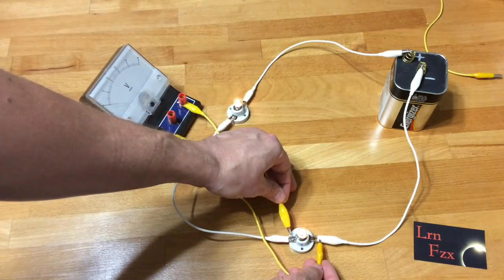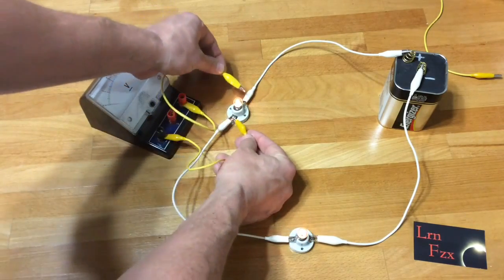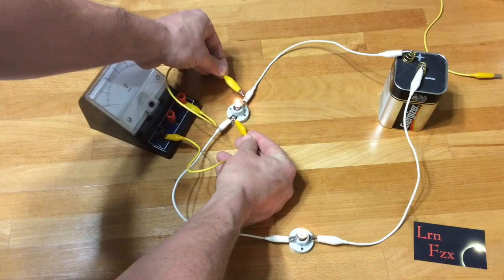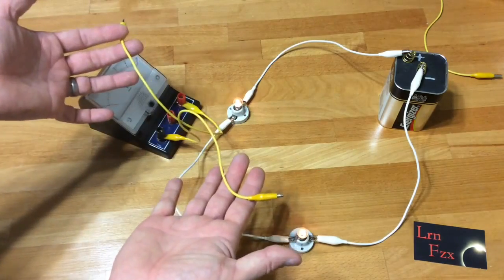Then negative and positive to both sides of each of the bulbs, and you have the voltage.